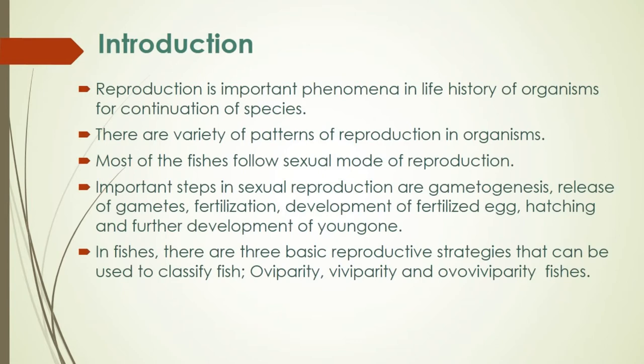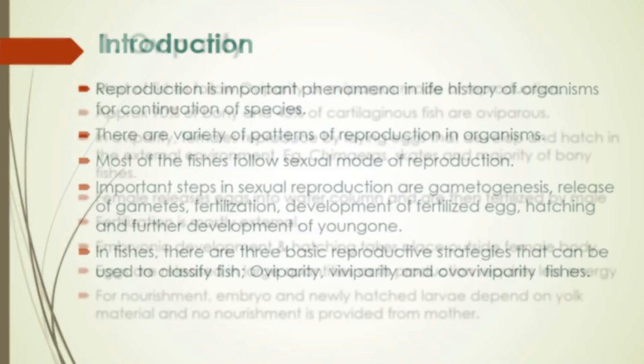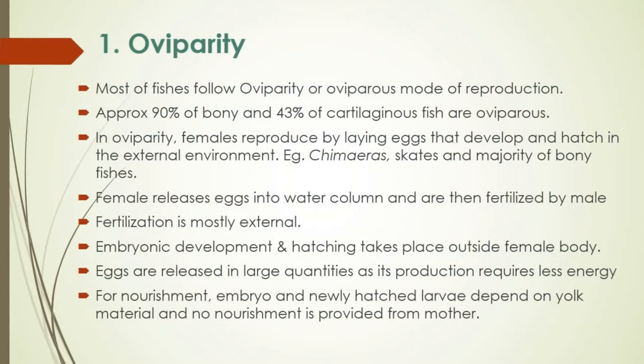The three groups are oviparity, viviparity, and ovoviviparity. Most fishes follow oviparity, or the oviparous mode of reproduction. Approximately 90% of bony fishes and 43% of cartilaginous species are reported to be oviparous. In oviparity, females reproduce by laying eggs that are developed and hatched in the external environment.